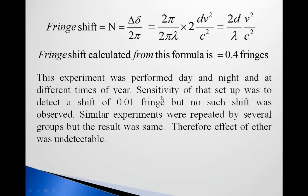The fringe shift calculated from this formula was expected to be 0.4 fringes. This experiment was performed day and night at different times of the year. The sensitivity of the apparatus was 0.01 fringes, but no such shift in fringes was observed. Similar experiments were repeated by several groups but the result was the same — there was no shift in fringes. Therefore, the effect of ether was undetectable, because the experiment was devised to detect the existence of ether. Since there was no shift in fringes, the effect of ether was undetectable — there was no ether medium.